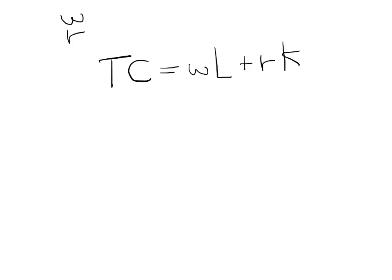This equation says the total cost of production equals the wage times the amount of labor you use, plus the rent times the amount of capital you use—machines, plants, and equipment.